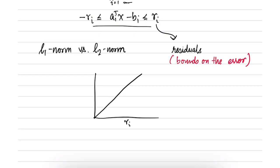In the L1 norm minimization problem, we are minimizing the absolute value of the residuals. This is the penalty or loss function. When we have different residual values for different points i equal to 1 to m, we are putting a higher penalty on those residuals which are larger. In the L2 norm minimization problem, we have a quadratic loss, so we put a significantly higher penalty on larger residuals.